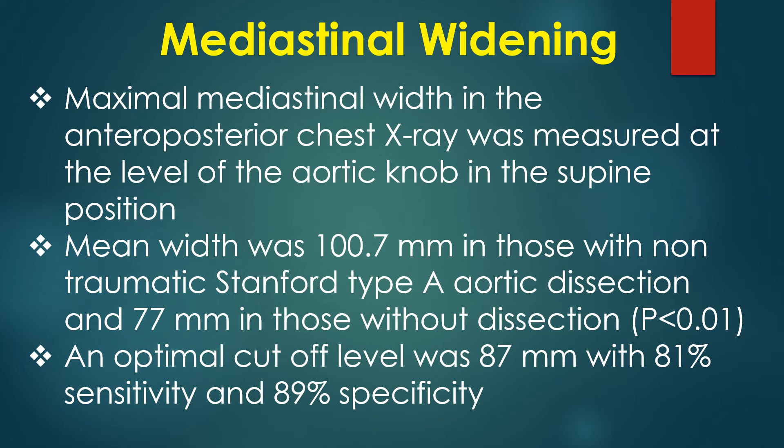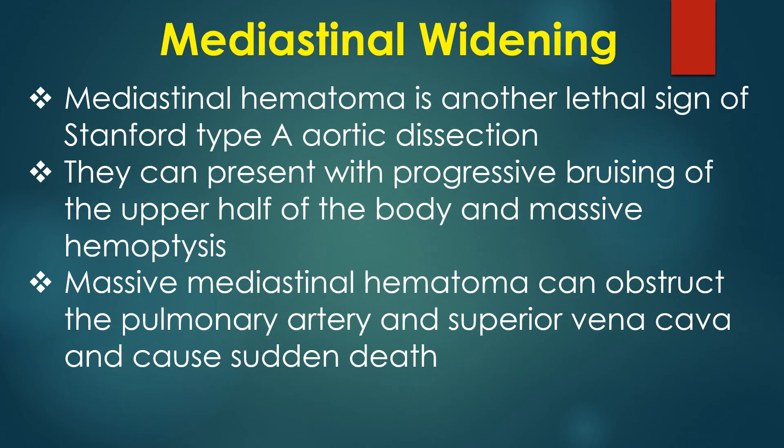Mean width was 100.7 mm in those with non-traumatic Stanford type A aortic dissection and 77 mm in those without dissection. An optimal cutoff level of 87 mm had a sensitivity of 81% and a specificity of 89%. Mediastinal hematoma is another lethal sign of Stanford type A aortic dissection.